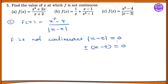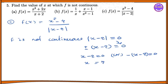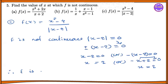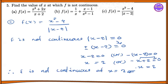That modulus is plus or minus. We have to look at x minus 2 equals 0. So x equals 2. Minus x plus 2 equal to 0, so we have x equals 2. Therefore f is not continuous at x equal to 2.